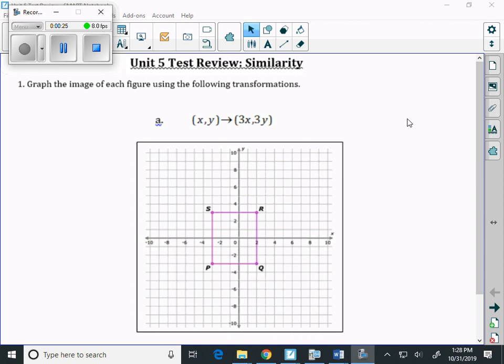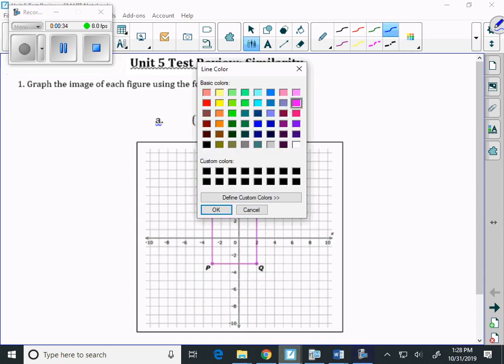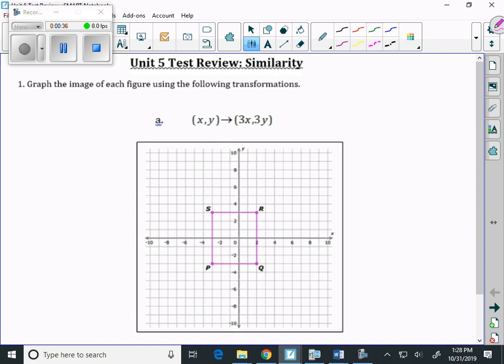So that means we're going to make this figure three times bigger. And our ordered pair for s is negative 3, 3. Our ordered pair for r is 2, 3.